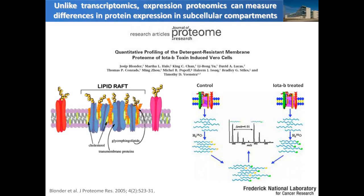Here is a paper we published a couple of years ago looking into the lipid rafts of cells treated with IOTA-B toxin and with vehicle. The major focus of that study was to find out what proteins are associated at the cell surface and internalizing IOTA-B toxin into the cell line. We used strong cation exchange fractionation coupled with lipid raft isolation using density gradients, and also O-18/O-16 differential labeling to compare control with IOTA-B treated cells.